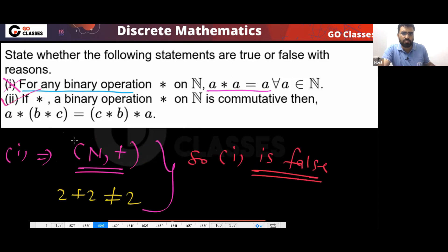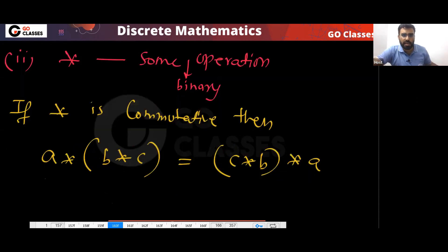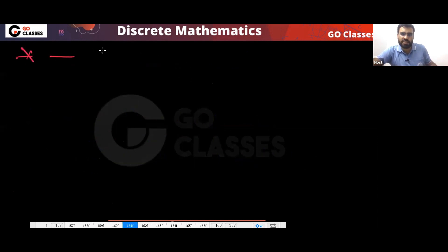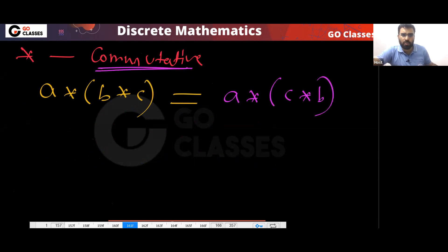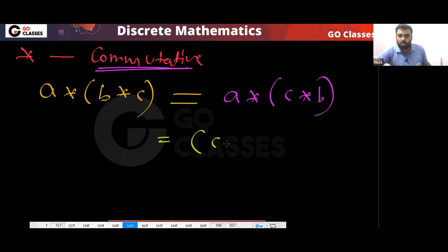Why is the second statement true? Because if the star operation is given as commutative, then A★(B★C) can be written as A★(C★B) because of the commutative property, and further rearranged similarly. So the second statement is correct.